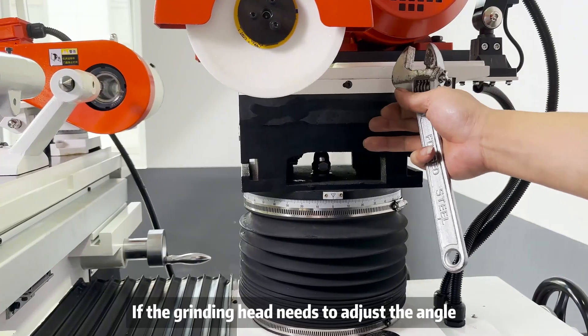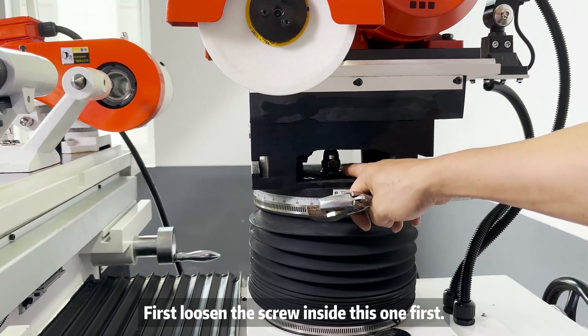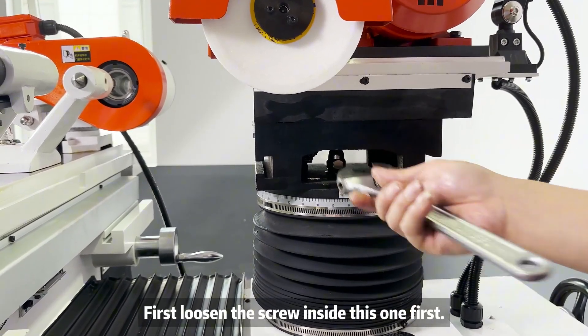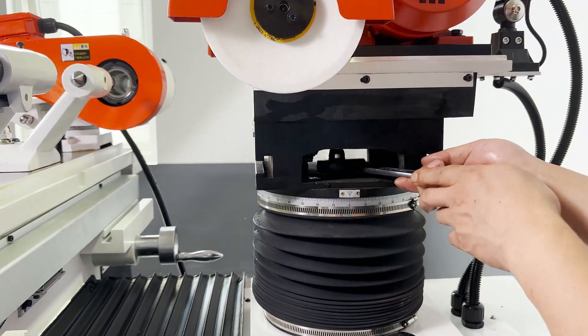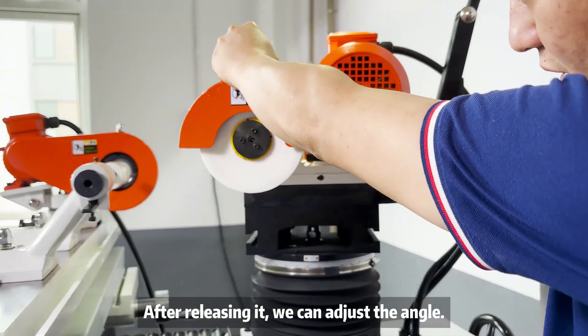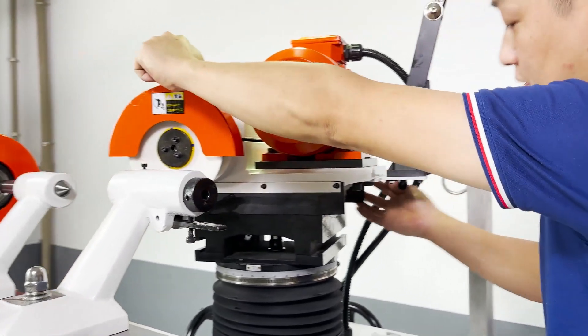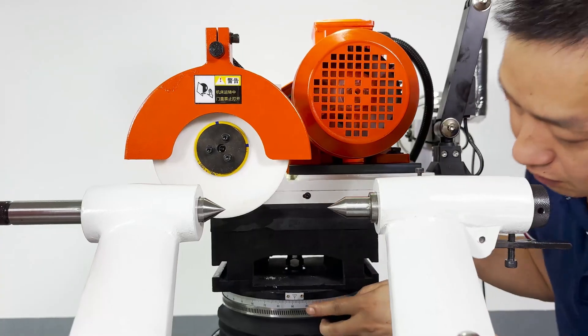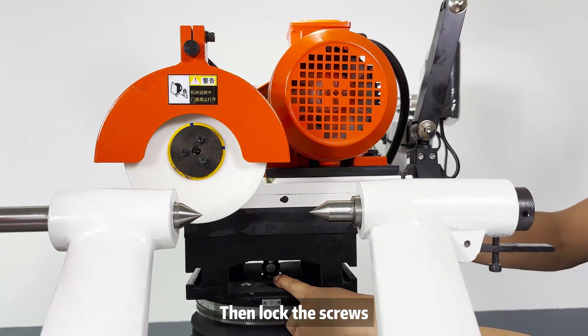If the grinding head needs to adjust the angle, first loosen the screw inside this one first. After releasing it, we can adjust the angle. Then lock the screws.